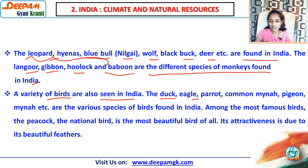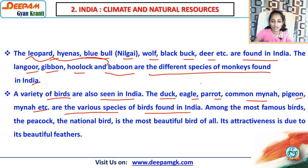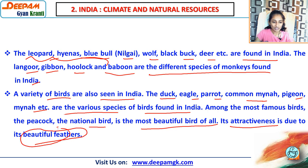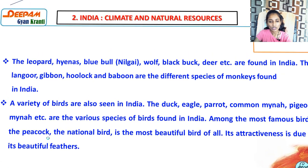A variety of birds are also seen in India. The duck, eagle, parrot, cormorant, myna, pigeon, and myna etc. are various species of birds found in India. But because of deforestation, their numbers are decreasing nowadays. Among the most famous birds, the peacock — the national bird — is the most beautiful. That is why it is considered the national bird. Its attractiveness is due to its beautiful feathers.